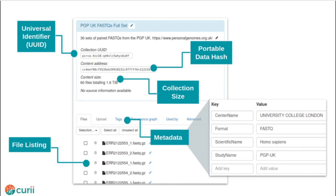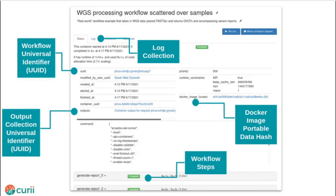Here is an example of the status page for a run of a whole genome variant calling workflow. Information recorded about the workflow includes the name, description, database UUID, hardware resources, a reference to the Docker image that was used, the command line, the steps making up the workflow, and the collection containing the final output files. On another tab, we can find links to the collections used as inputs to this workflow and the collection containing logs of the workflow run.